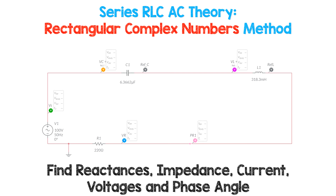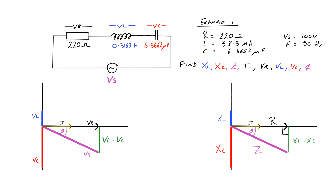Welcome to this video on series RLC AC theory using rectangular complex numbers as the method. We're going to find reactances, the impedance, the series current, voltages, and the phase angle. We've got our series RLC circuit with a resistor of 220 ohms, an inductor of 318.3 millihenries, a capacitor of 6.3662 microfarads, a supply voltage of 100 volts at 50 hertz.